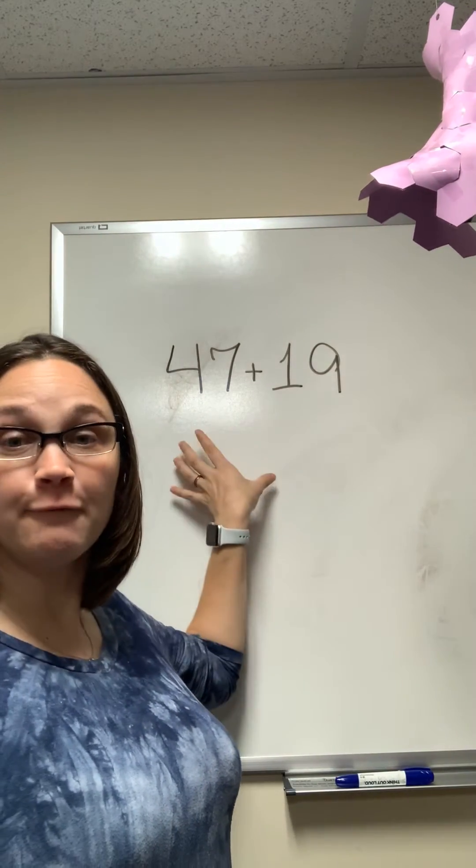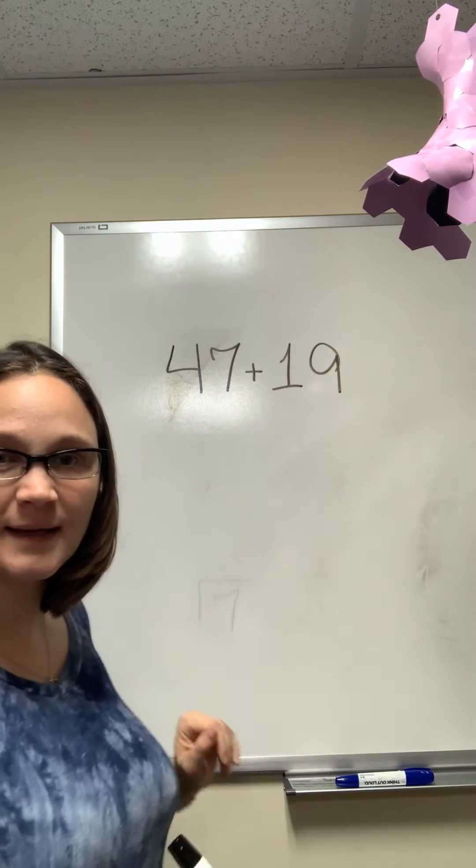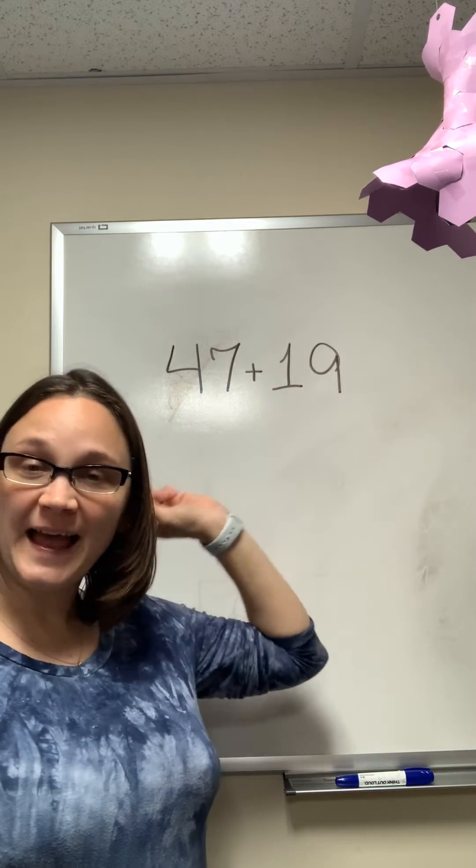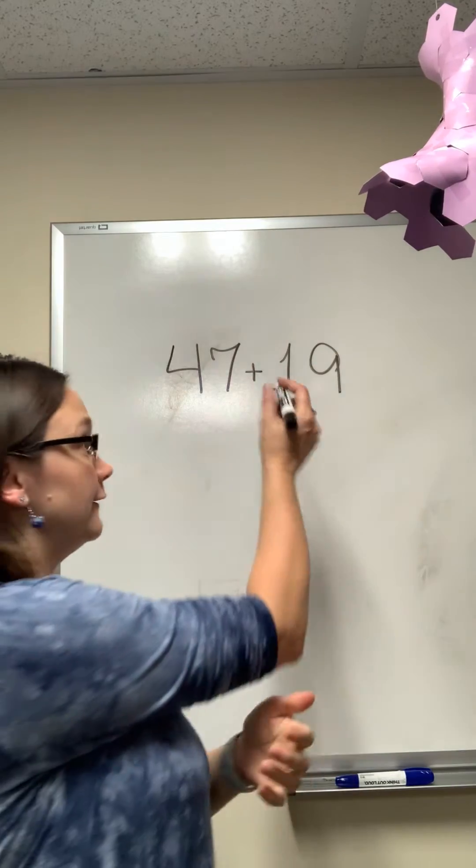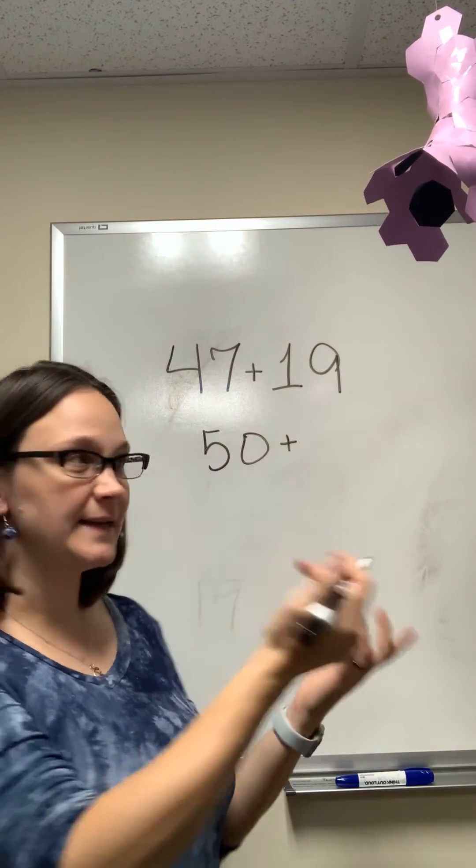Think of 47 as 40 and 7, and 19 as 10 plus 9. In that case, I could add my 40 and 10 to get 50, and then add my 7 and 9 to get 16.